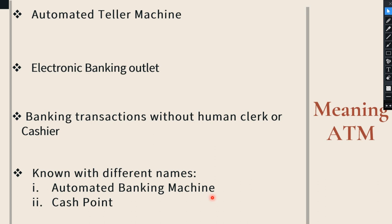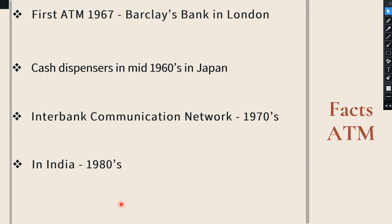This automated teller machine is also known as an automated banking machine. It is also called an automated cash machine and is also known as a cash point. In some countries, it is also known as a 'hole in the wall.' These are the various names given to the automated teller machine.